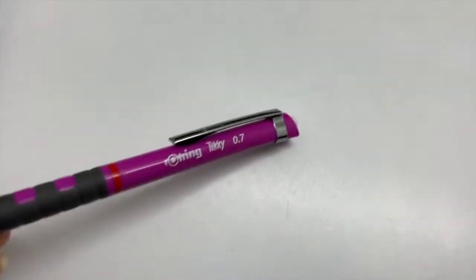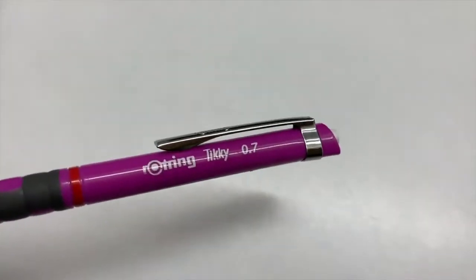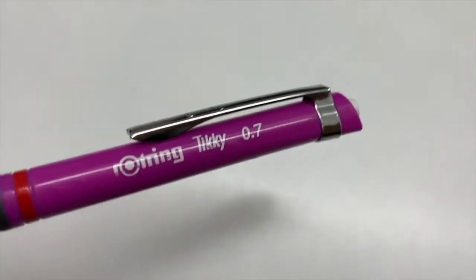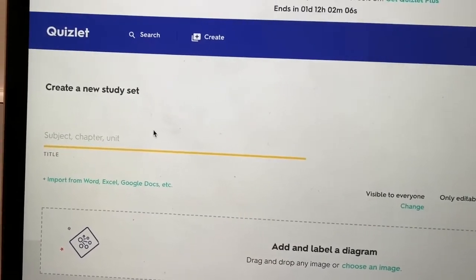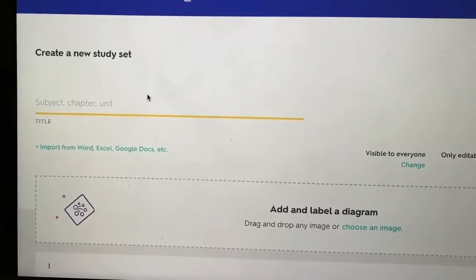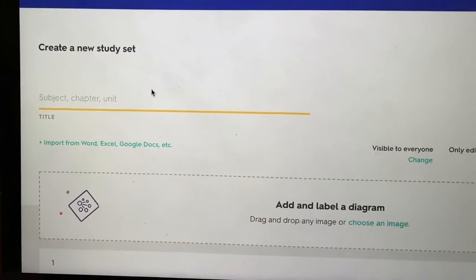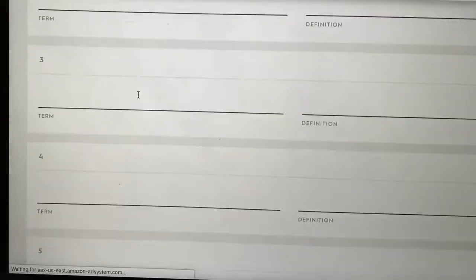If you were wondering, my pencil is this Rotring Tikky pencil. I'm not sure if that's how you pronounce it, but it's off of Amazon, and then I'm just using a Paper Mate eraser. Also, AP Stats is just a lot of memorization, so I'm going to be making a Quizlet with terms that I don't know for this test.